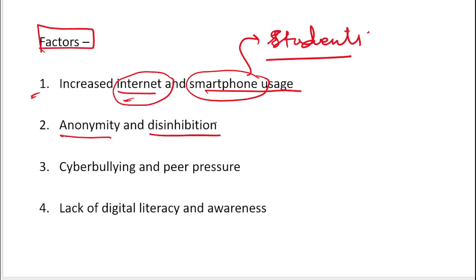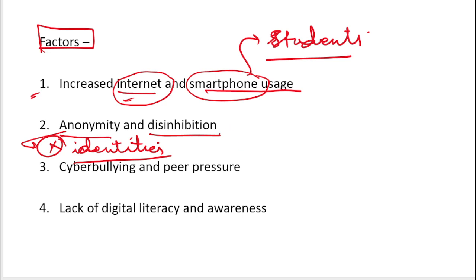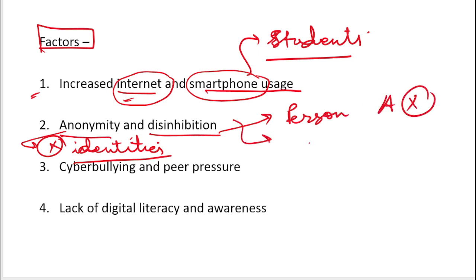Secondly, anonymity and disinhibition. Anonymity means acting without showing one's identity — without revealing who you are. Because there is no fear of being identified, people act with no danger. Disinhibition causes individuals to act more aggressively online than they would in person. In online platforms a person is more aggressive compared to their real-life nature, and this stems from the fact that their identities are hidden.